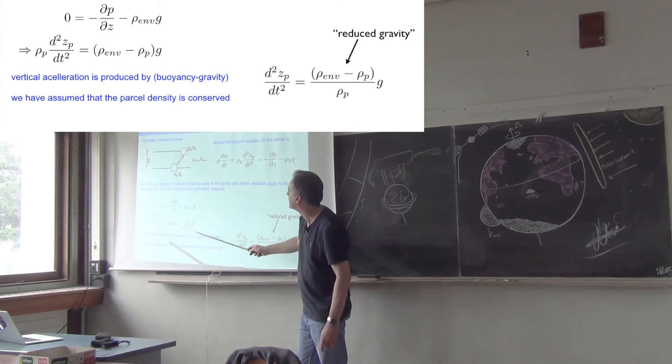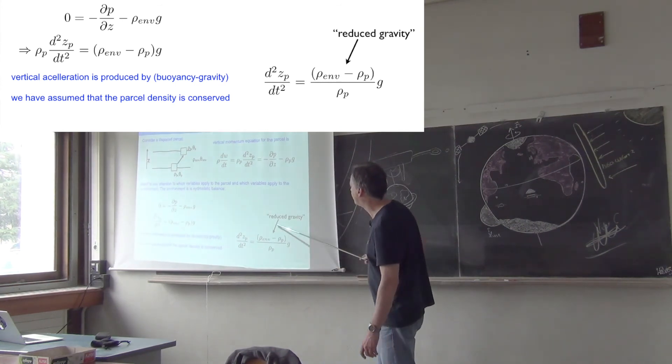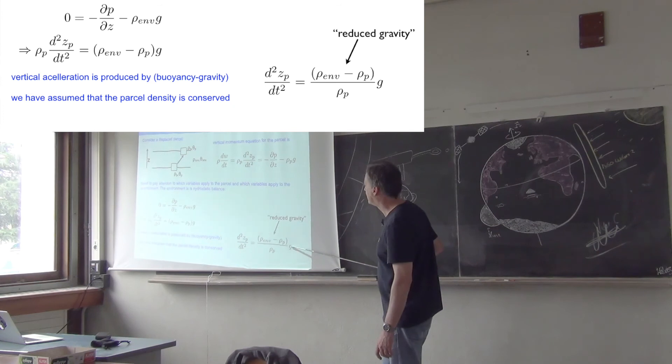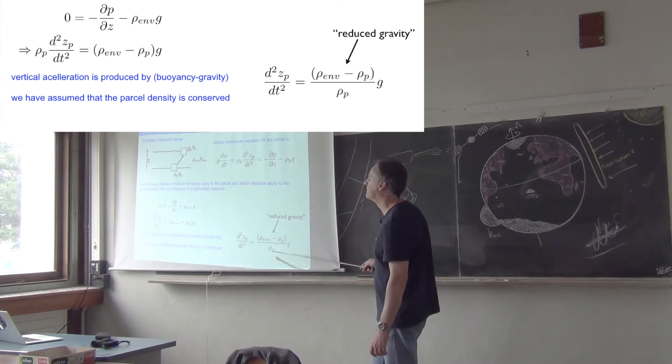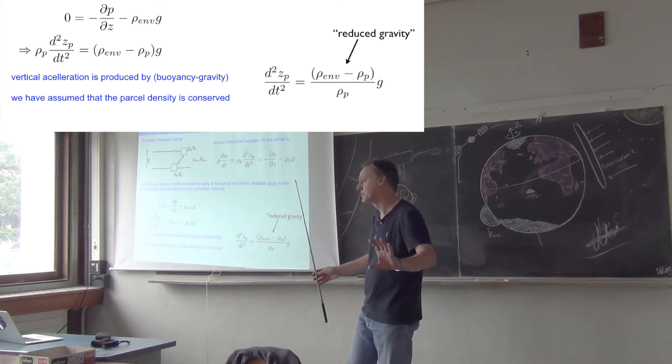So you can combine these two equations and you get an equation for the vertical acceleration in terms of the density difference between the parcel and its surroundings: the vertical acceleration is this factor times g, multiplied by Δρ/ρ, where that Δρ is the difference between the parcel and its surroundings—it could be positive or negative.